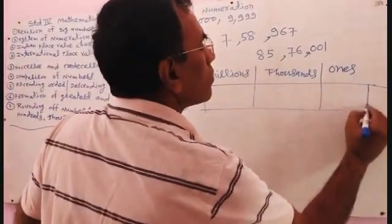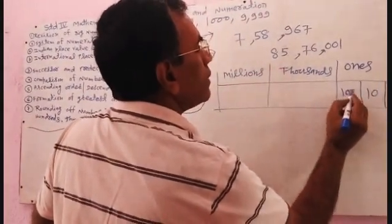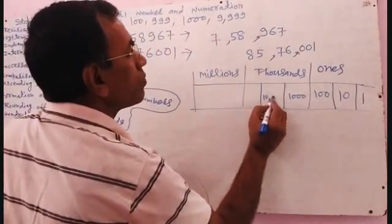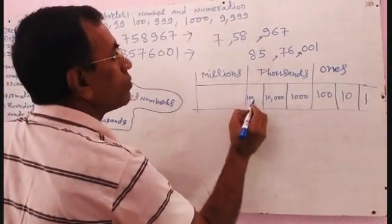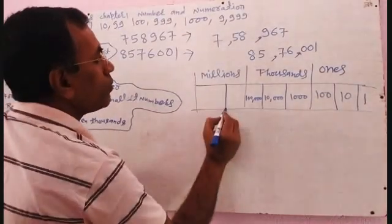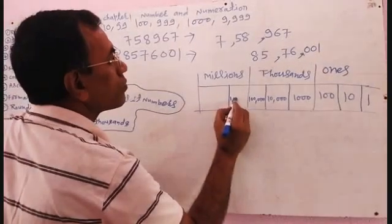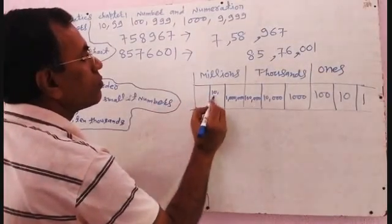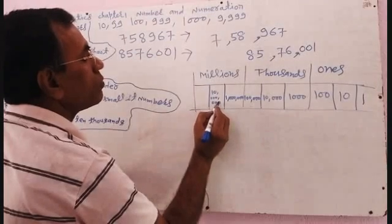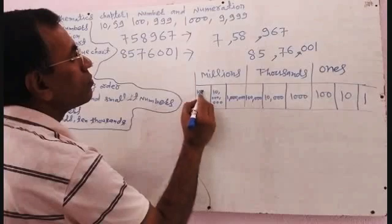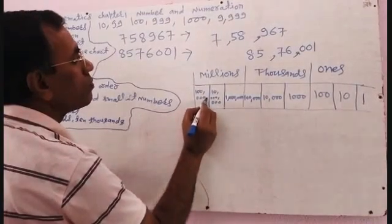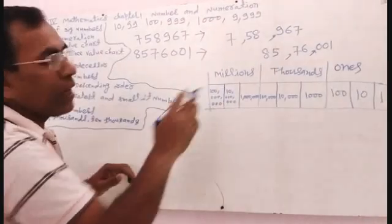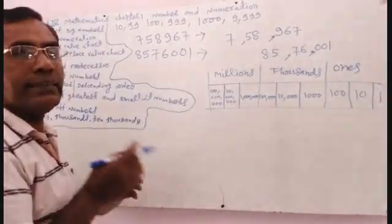In the ones period: ones, tens, hundreds. In the thousands period: one thousand, ten thousand, and hundred thousand. In the millions period: one million, ten million, and hundred million. You can write this in your copy in a straight line.